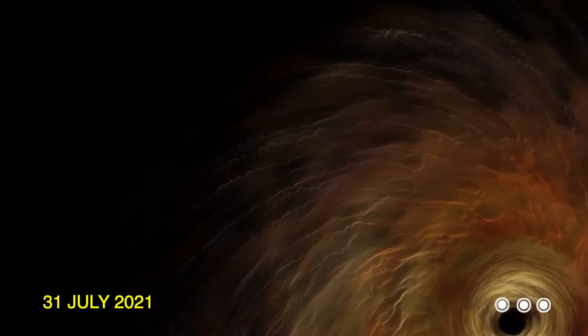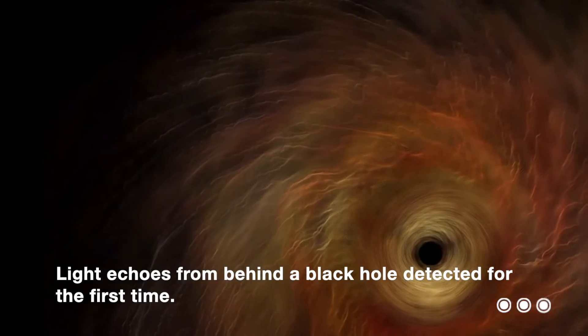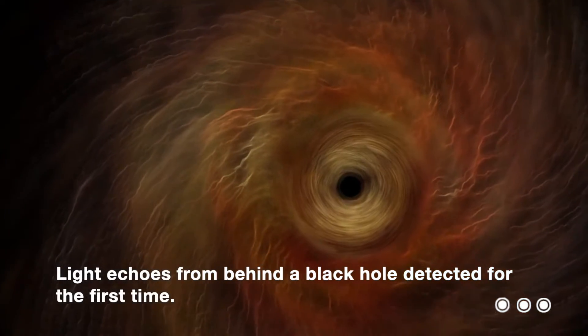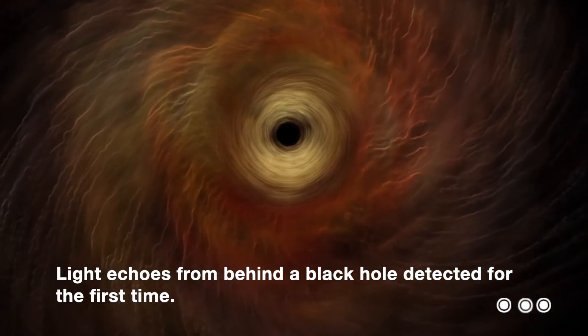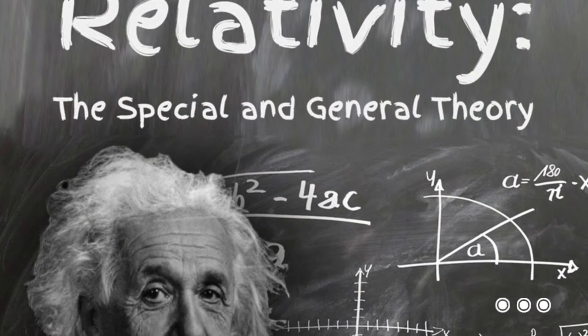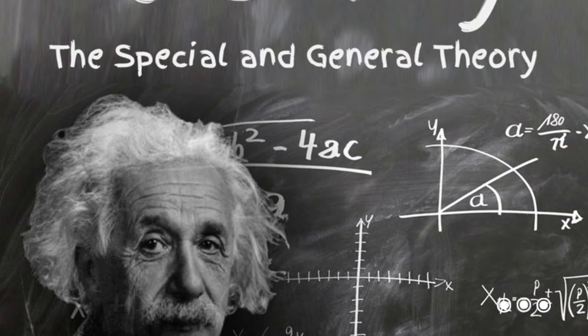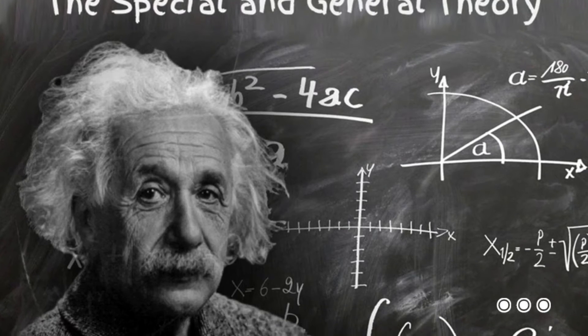Light echoes from behind a black hole have been detected for the first time. The new observations confirm an important prediction made by Einstein in his general theory of relativity. A black hole is formed when a star dies with a strong gravitational field.